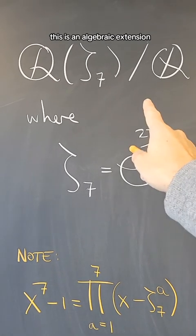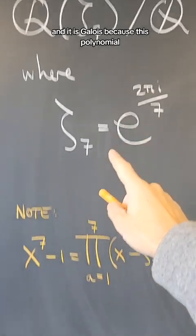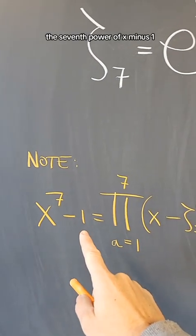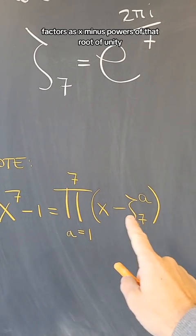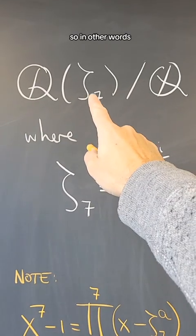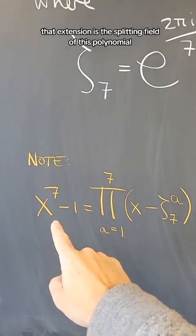This is an algebraic extension, and it is Galois because this polynomial, x to the 7th minus 1, factors as x minus powers of that root of unity. In other words, that extension is the splitting field of this polynomial.